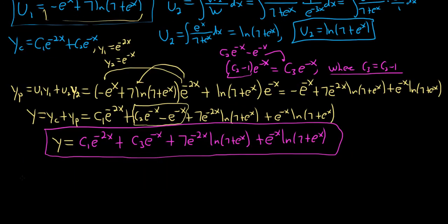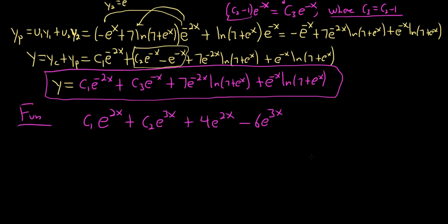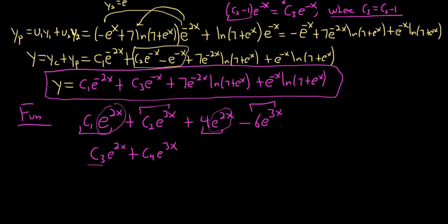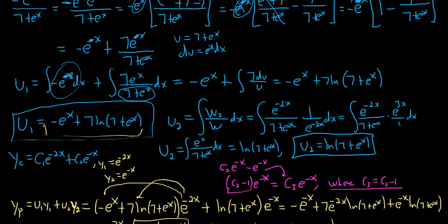As another example: if you had c1 e to the 2x plus c2 e to the 3x plus 4e to the 2x minus 6e to the 3x, you could combine those into c3 e to the 2x plus c4 e to the 3x, because c1 plus 4 and c2 minus 6 are still arbitrary constants. You're allowed to combine like terms and rename them. I hope this video has been helpful — it was a long problem and I did make a small sign error, so just make sure it's e to the x, not negative x. Good luck.